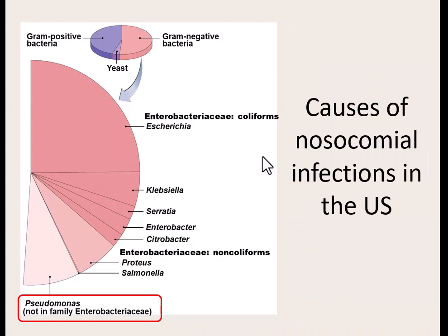Pseudomonas aeruginosa can cause ear infections and sinus infections in healthy individuals, but it's deadly for those with cystic fibrosis and third-degree burns. It's getting harder to treat, and because it infects burn victims and cystic fibrosis patients in hospital settings, it is one of the top causes of nosocomial — or healthcare-associated — infections in the United States. Out of all the gram-negative bacteria causing healthcare-associated infections, almost all are from the Enterobacteriaceae group, meaning fecal-driven, except for this one.